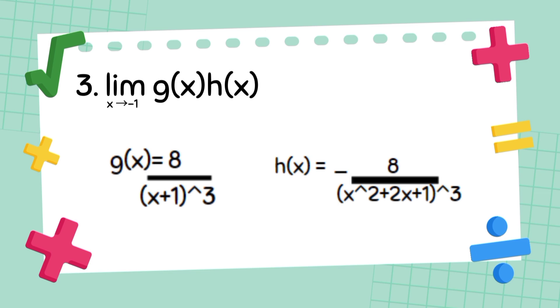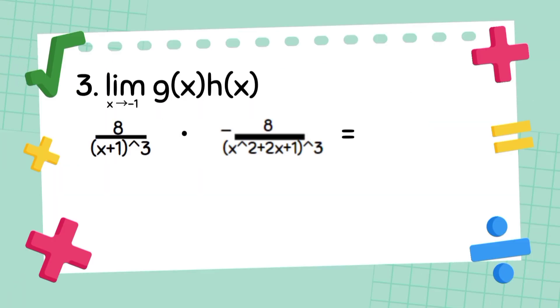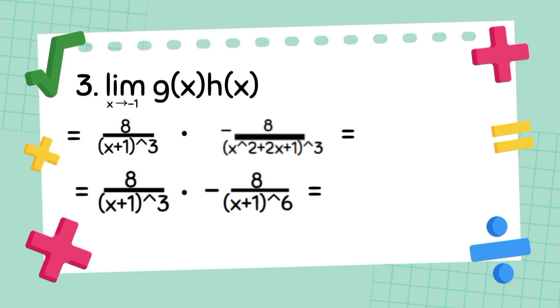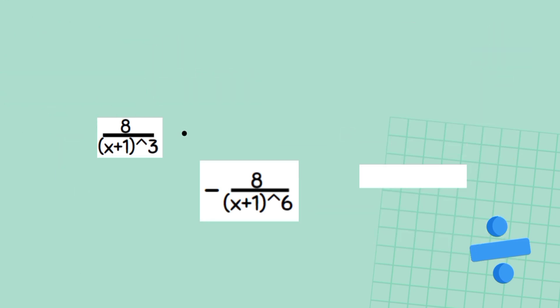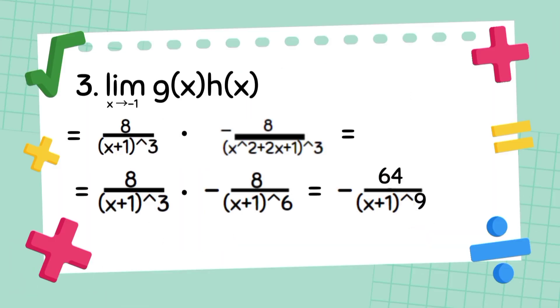We will substitute our given values into the equation: g of x times h of x equals 8 over x plus 1 raised to 3, times negative 8 over x squared plus 2x plus 1 raised to 3. Next, we factor both sides, giving us 8 over x plus 1 raised to 3 times negative 8 over x plus 1 raised to 6. Solving this gives negative 64 over x plus 1 raised to 9.